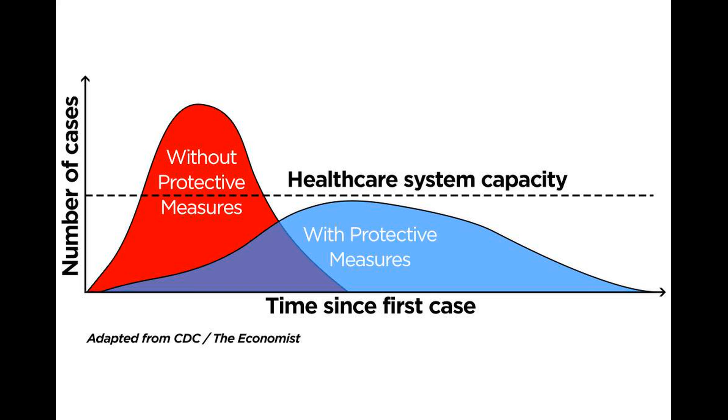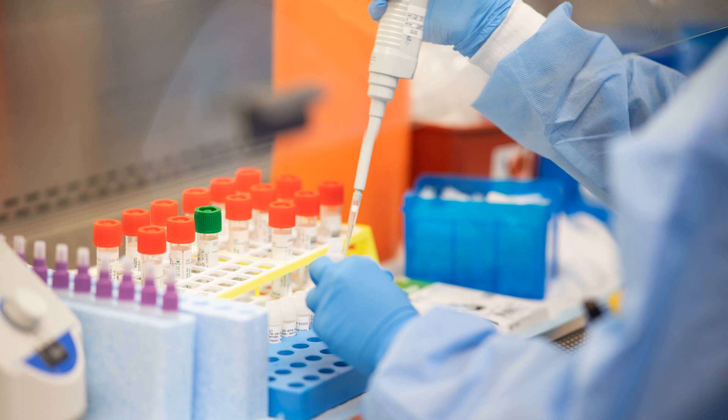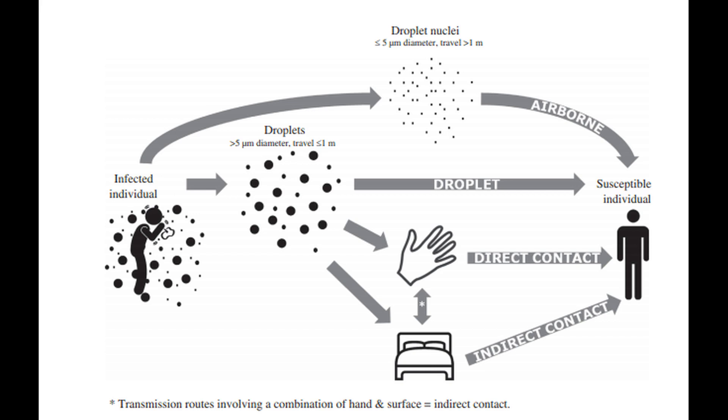The basic reproduction rate, or R0, is estimated between 1.4 to 3.9 — the average number of people that will become infected by one infected individual. But this rate of transmission is highly variable and depends on many different factors. Governments need to take quick actions such as case finding, contact tracing, and suspending public gatherings. But there are things that we as individuals can do to lower the R0 of the disease and flatten the curve.